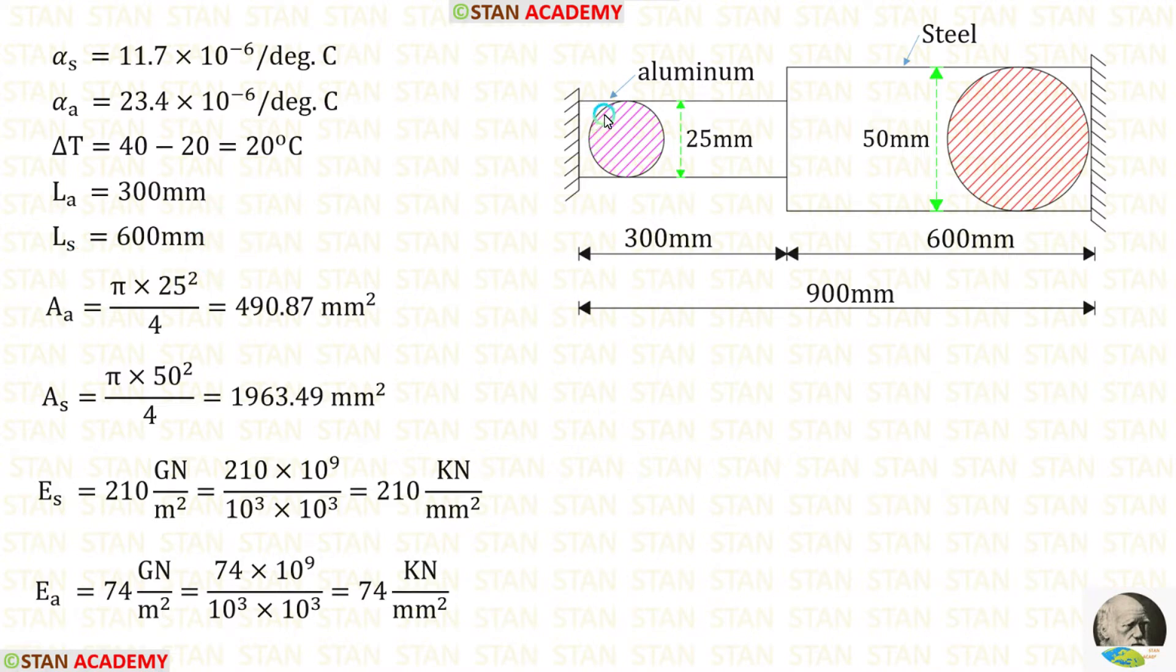The cross section of aluminum is circle. The cross section of steel is also circle. The diameters are given. The formula for the area is pi D squared upon 4. Using that formula, we can calculate the area of aluminum and steel. The Young's modulus are given in GN per meter squared. We can convert them into kN per millimeter squared.